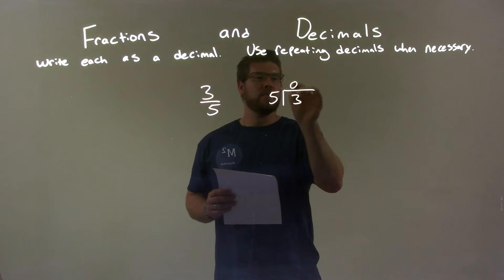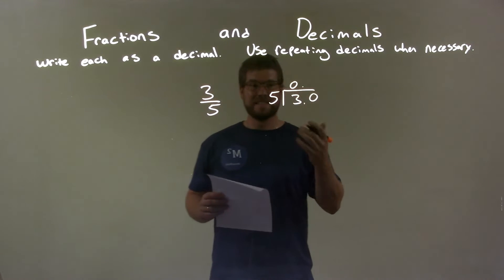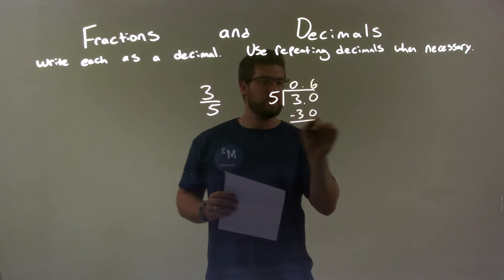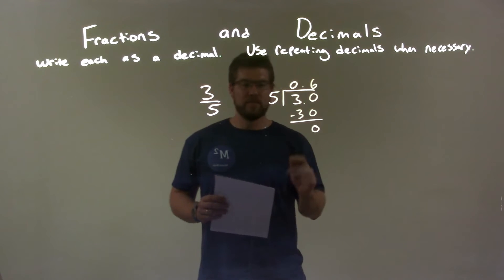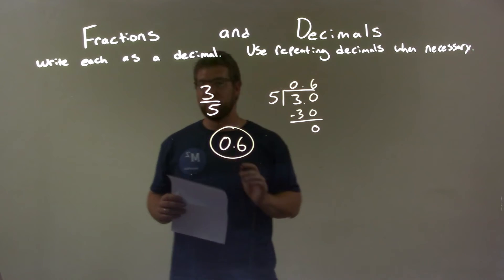Well, five doesn't go into three, so we add another place value here. Does five go into 30? That's evenly six times. Six times five is 30. We subtract it. 30 minus 30 is zero, and we're done. We got our final answer, 0.6. That's it.